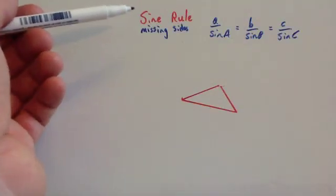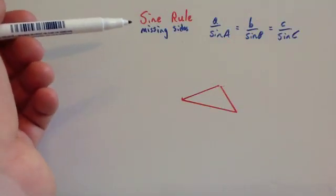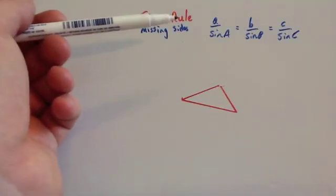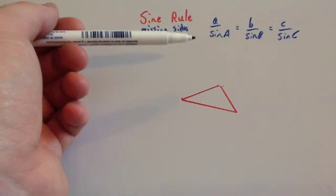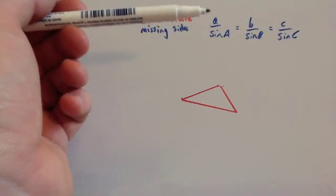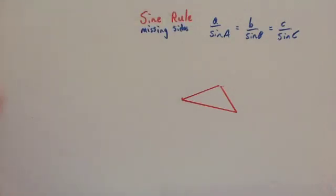In this video we're going to look at the sine rule for finding missing sides. The sine rule is a over sin A equals b over sin B equals c over sin C.